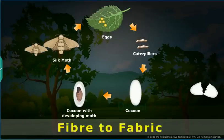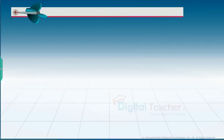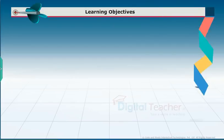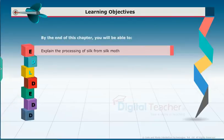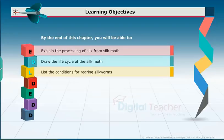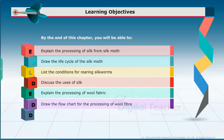Welcome to the chapter 'Fiber to Fabric.' This slide presents an overview of the chapter. The learning objectives state that by the end of this chapter, you will be able to explain the processing of silk from the silk moth, draw the life cycle of the silk moth, list the conditions for rearing silkworms, and discuss the uses of silk.